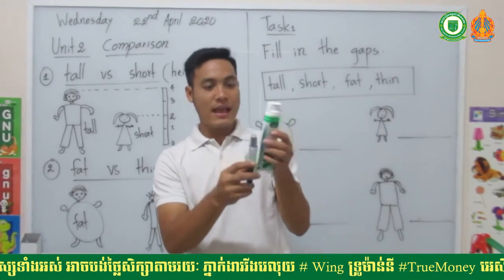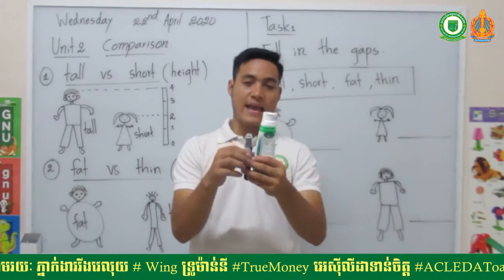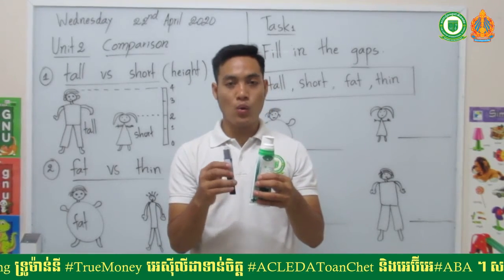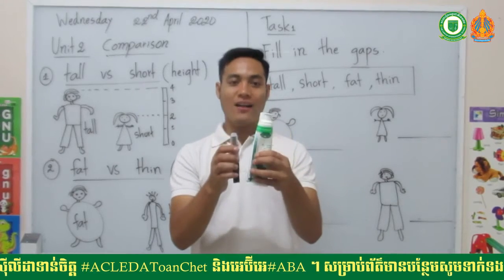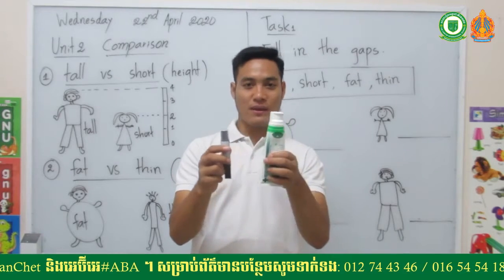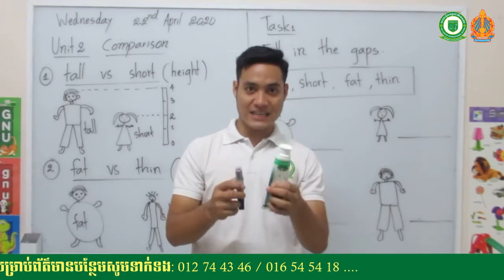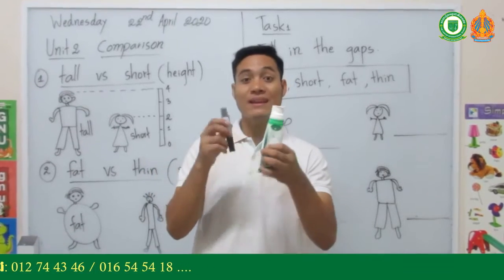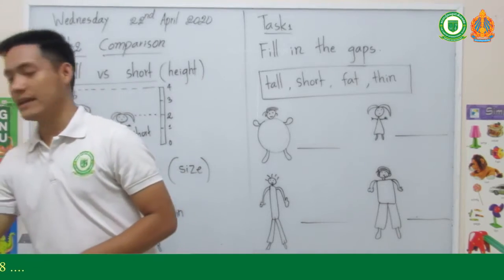I put these two things close to each other and I can say the shoe is taller and the marker is shorter. So we use taller and shorter when we compare the height of two things, two people, or whatever two things we want to compare.